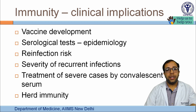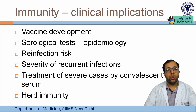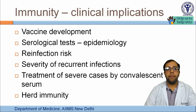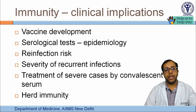Herd immunity is an important epidemiological concept: when a majority of the population — typically 50 to 60% — has been infected and developed an immune response, they protect the non-immune population from developing disease. Once herd immunity develops, the majority of infected people can prevent further transmission to those without adequate immunity.